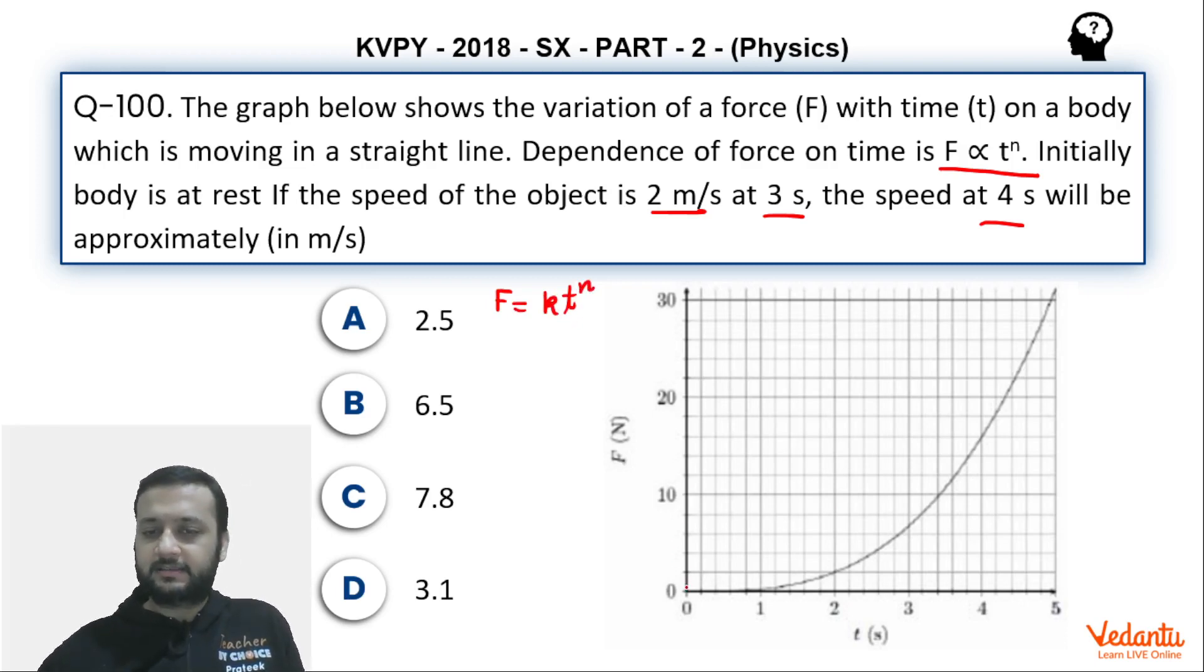Now if you see on the y axis, between two successive numbers on the y axis, like 0 and 10, 10 and 20, 20 and 30, there are 5 equal divisions. Like this is 1 division, 2nd division, 3rd division, 4th division, 5th division. So 1, 2, 3, 4, 5. That means 1 division corresponds to 2 newtons.